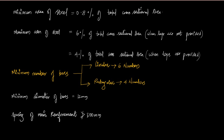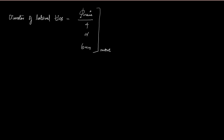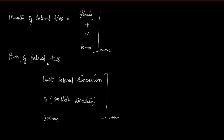The minimum diameter of the bar is 12 mm. The spacing of main reinforcement along the periphery should not exceed 300 mm. The diameter of lateral ties shall be the greater of: d_main / 4 (largest bar diameter divided by 4) or 6 mm. The pitch of lateral ties shall be the least of: least lateral dimension, 16 × smallest longitudinal bar diameter, or 300 mm.